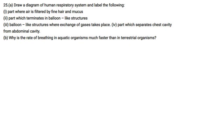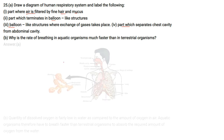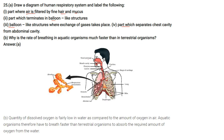Draw a diagram of the human respiratory system and label: the part where air is filtered by fine hair and mucus (nasal passage), the part that terminates in balloon-like structures, the balloon-like structures where gas exchange takes place (alveoli), and the part separating the chest from the abdominal cavity (diaphragm). The diagram shows the nasal passage, mouth cavity, pharynx, larynx, trachea with rings of cartilage, lungs with bronchi, bronchioles, alveolar sacs, and the enlarged alveoli. The covering is through ribs.